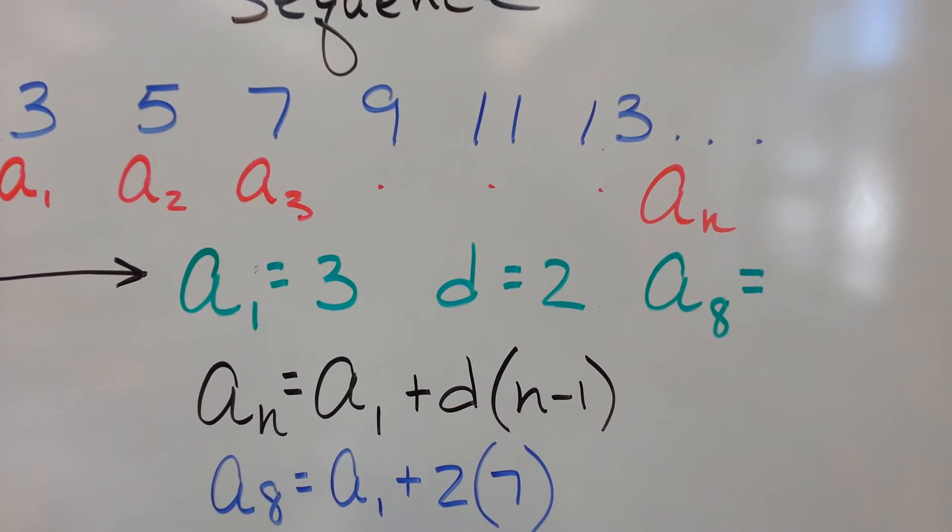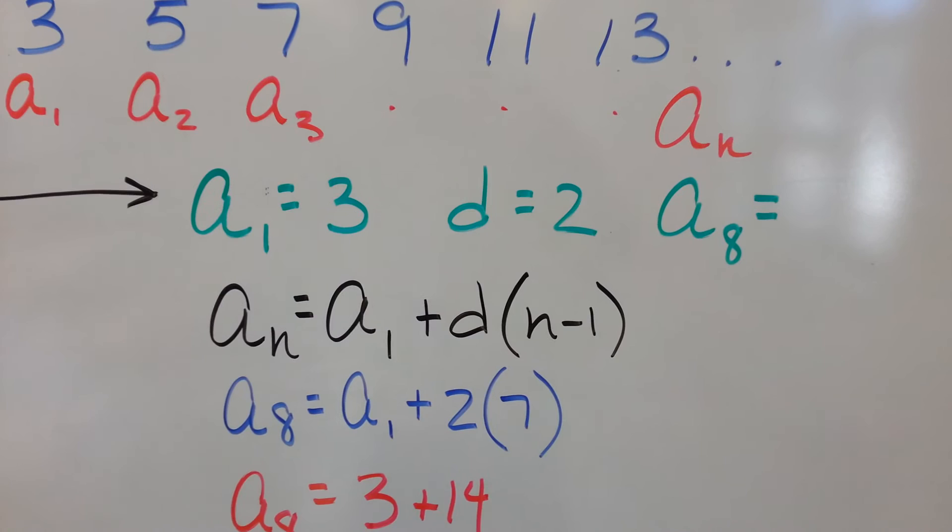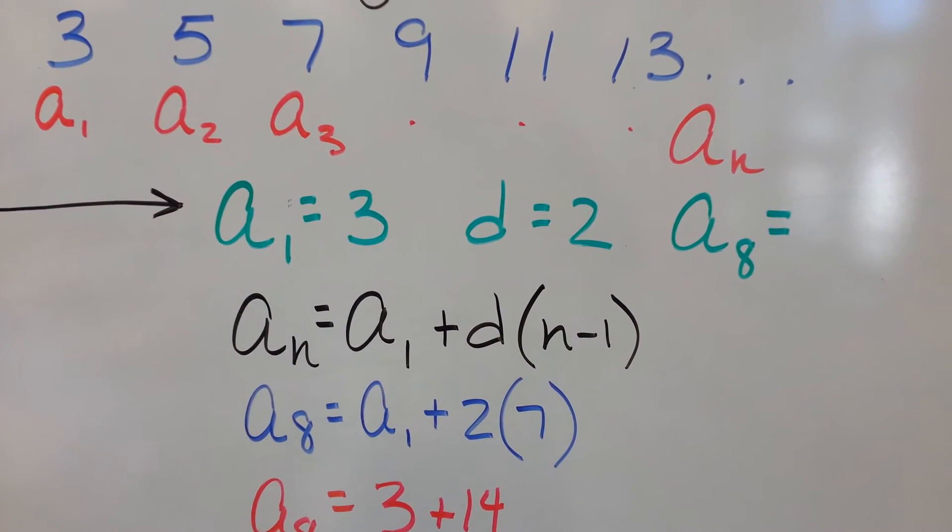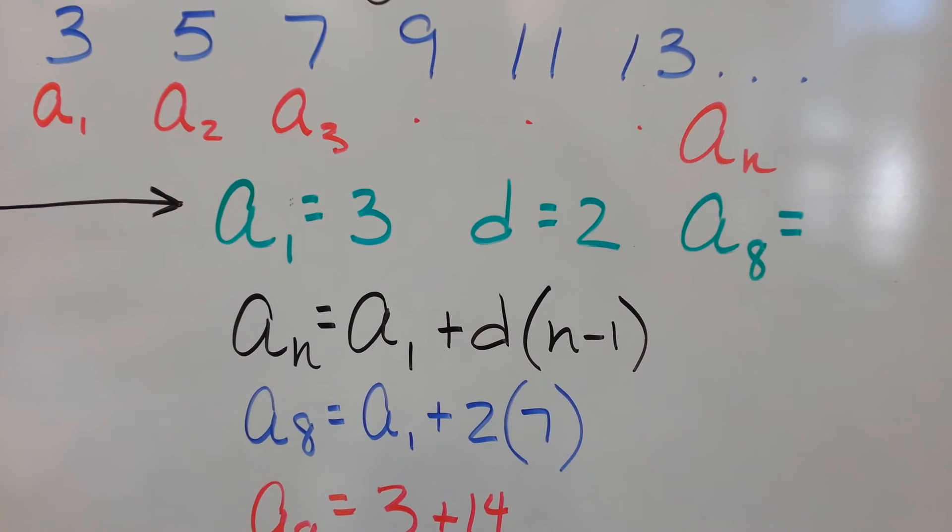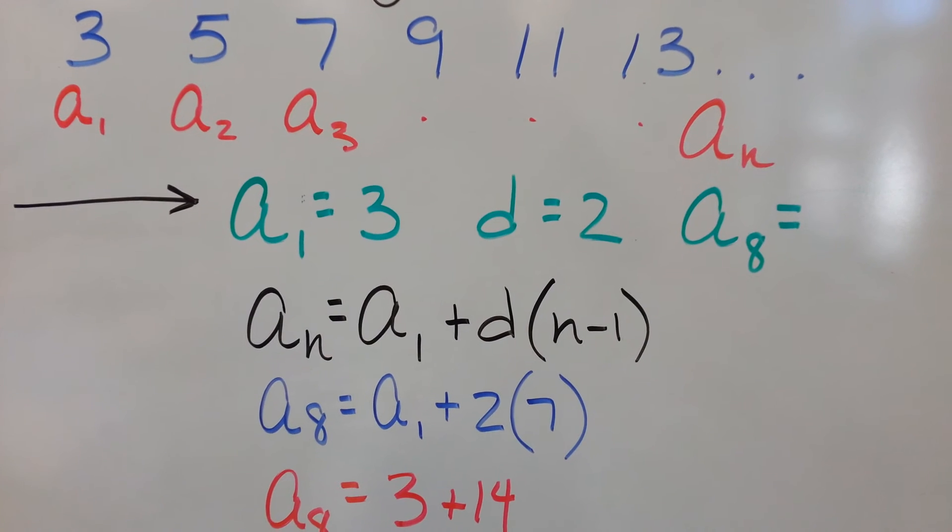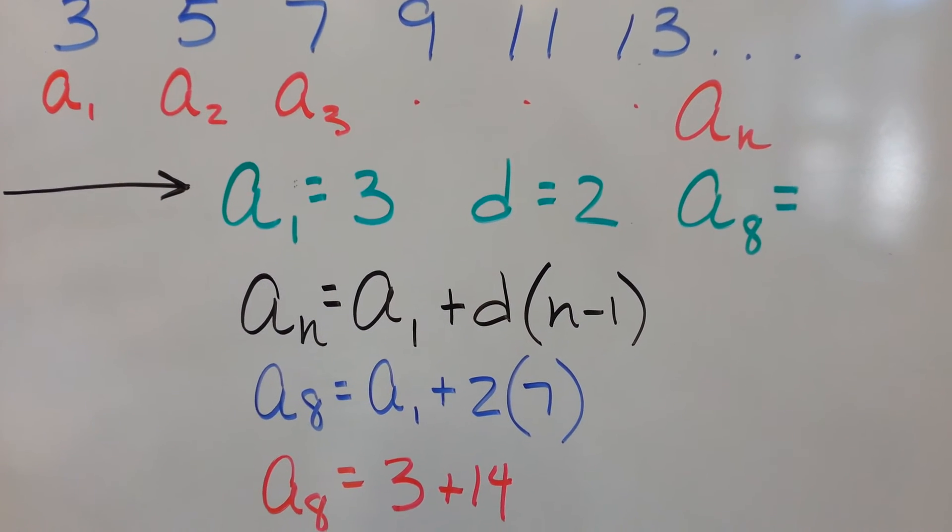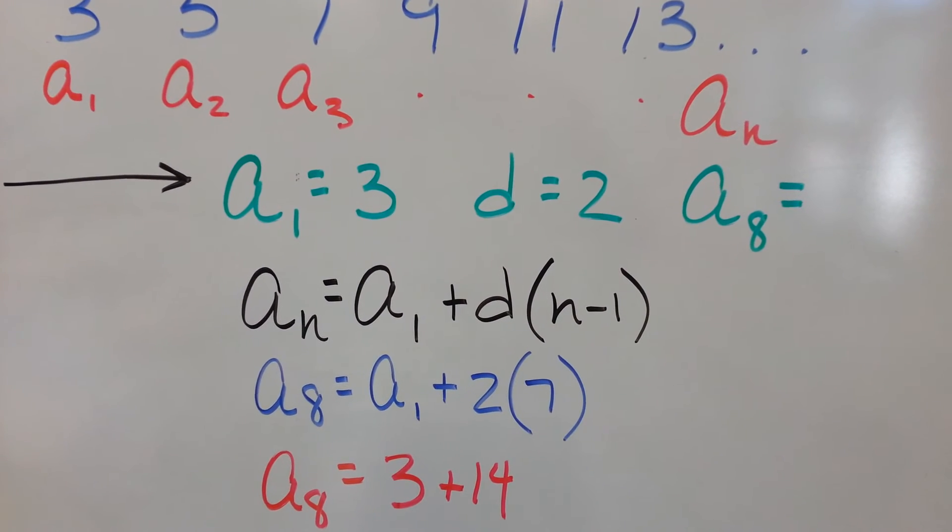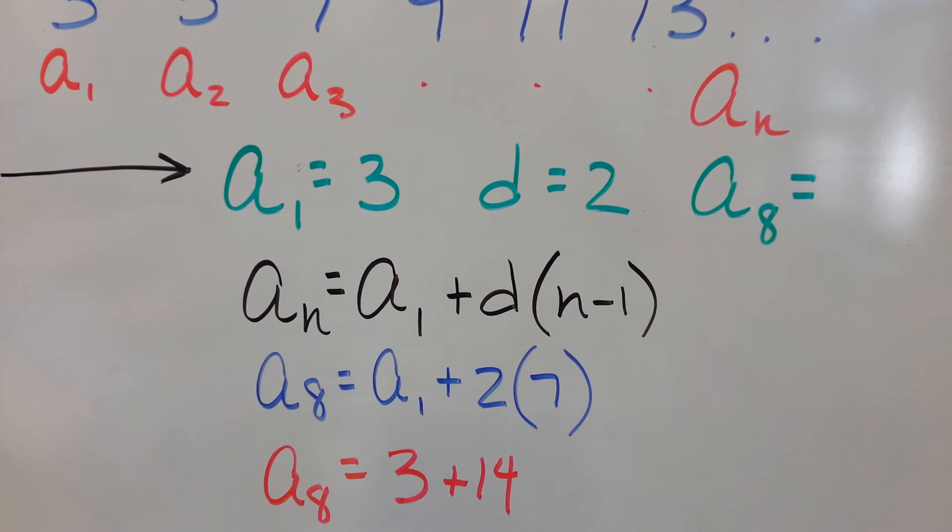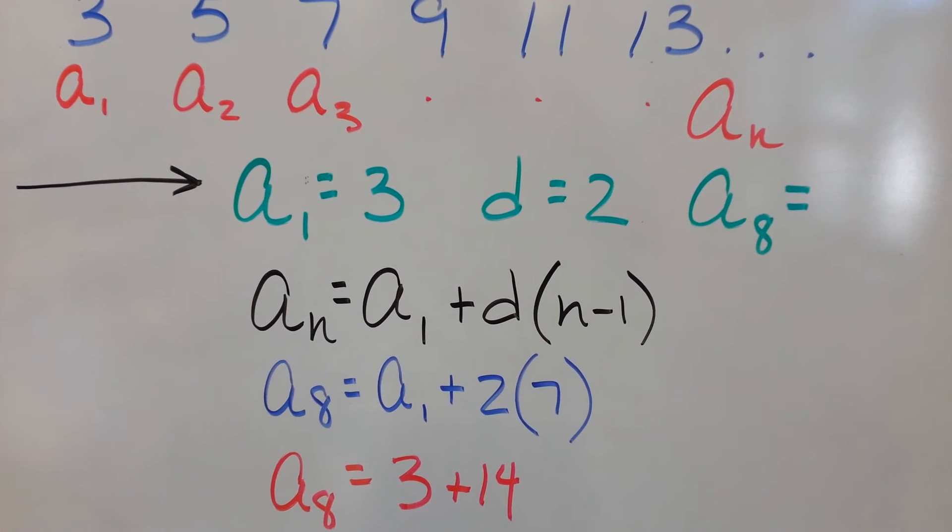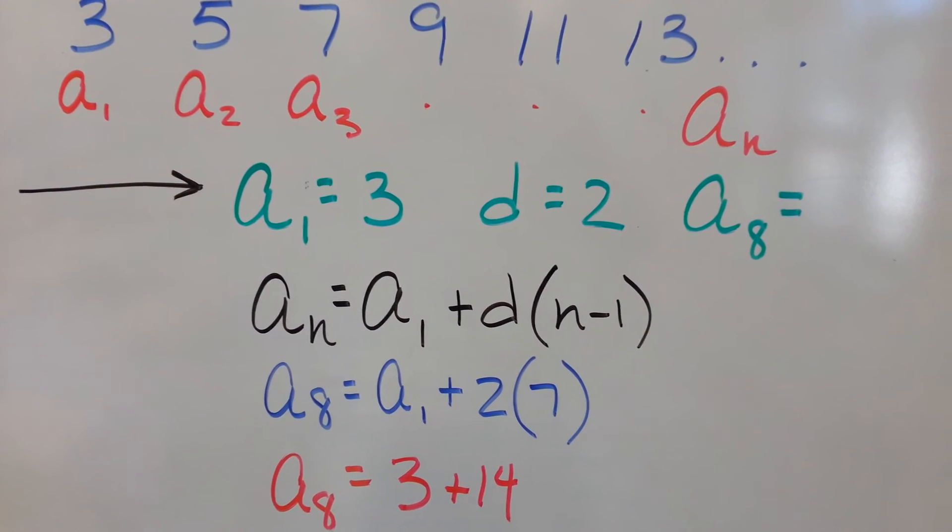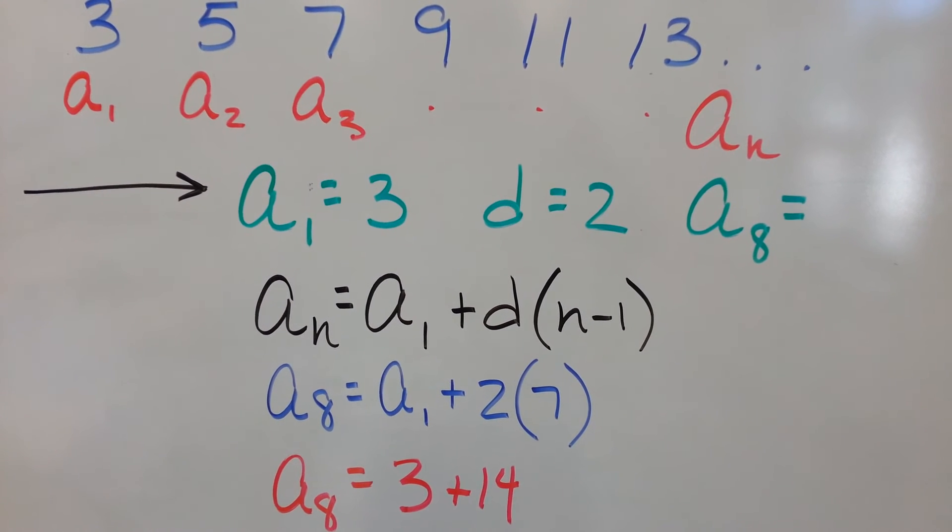So here's what you do. You have this little formula in black. It says the nth term is equal to the first term plus the common difference times n minus 1. So we're looking for the 8th term, so I write A sub 8 equals the first term plus our common difference is 2, so I put a 2 in there. And n is 8 in this case, so 8 minus 1 is 7.